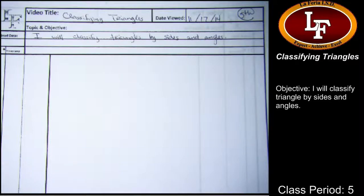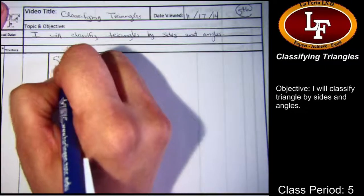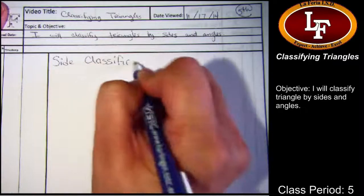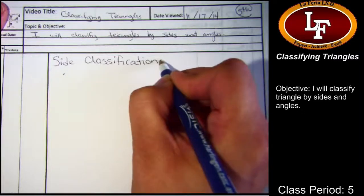Today's lecture is called Classifying Triangles. And the objective, your quick summary for today is I will classify triangles by sides and angles. So I'm going to go over the vocab super fast and then we'll get to applying them and talking about the different ways that this can look. So let's start off with side classifications. Plural. Because there's more than one of them.